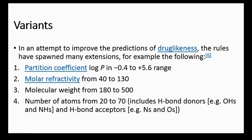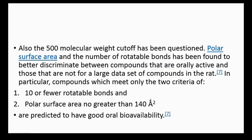Variants: In an attempt to improve the predictions of drug-likeness, the rules have spawned many extensions, for example: partition coefficient log P in the range of -0.4 to +5.6; molar refractivity from 40 to 130; molecular weight from 180 to 500; number of atoms from 20 to 70, including H-bond donors such as hydroxyl and amine groups, and hydrogen bond acceptors such as nitrogen and oxygen atoms. Also, the 500 dalton molecular weight cutoff has been questioned.